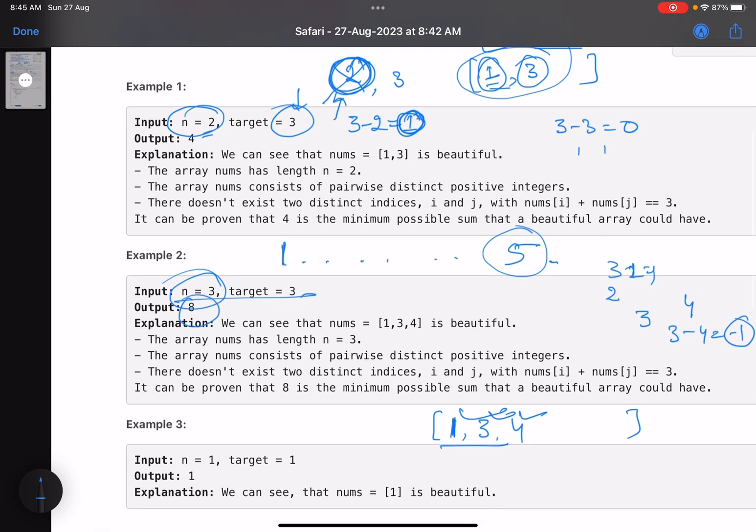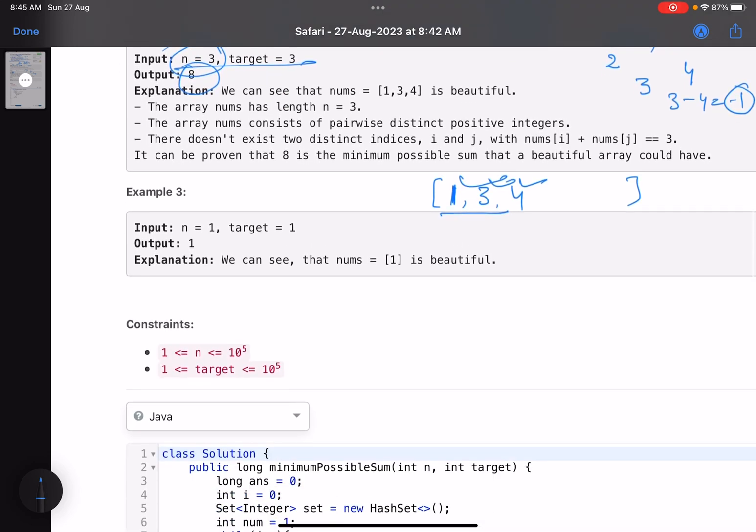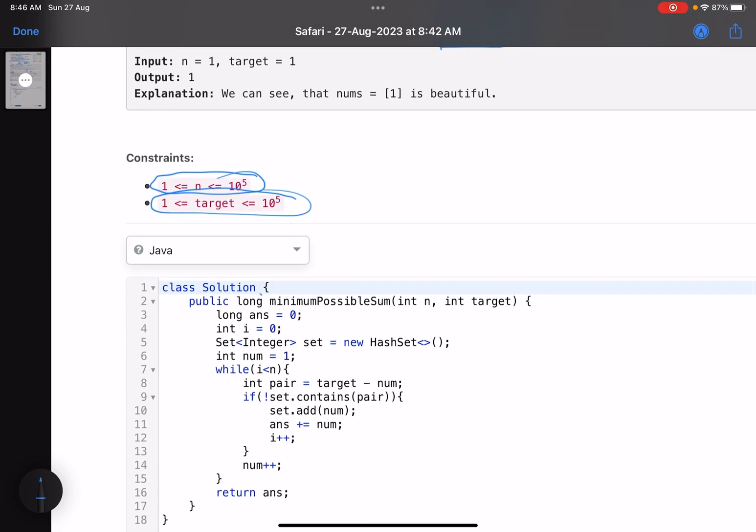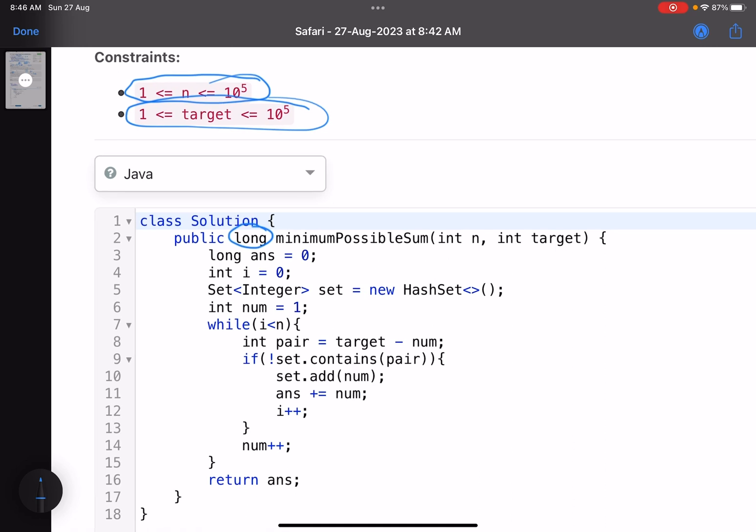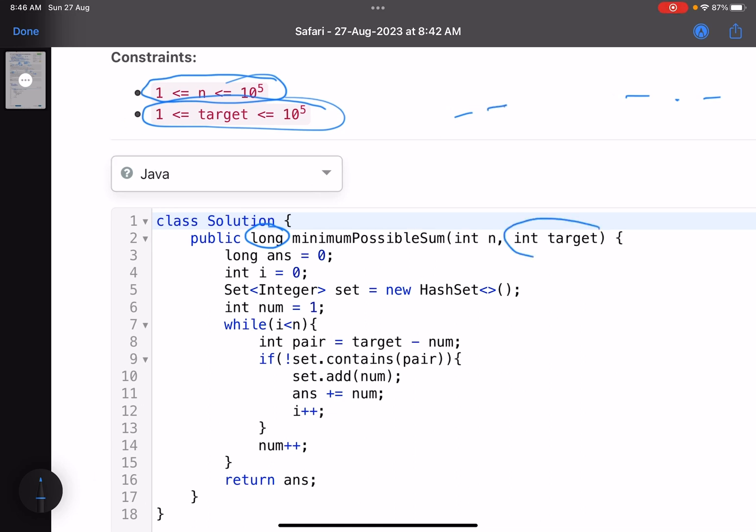The constraints are: the number of elements is this, the target can be this. You can see that the return type is long as well. That's because, just take an example: suppose the target is very large. Suppose the target is such that even if you add two maximum numbers which are less than 10^5, it doesn't give you a target.